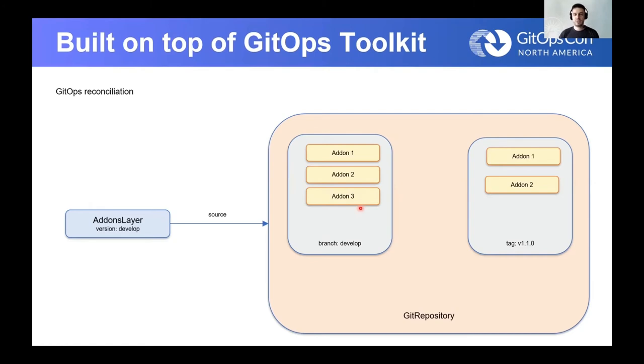Everything happens automatically, starting from the Git commit to the develop branch. The source controller pulls the latest changes from the Git repository, the CRON controller gets a fresh copy of the files and notices the difference. It then proceeds to apply, move, or delete an add-on from the layer in order to bring it to the desired state.